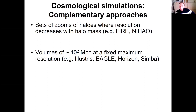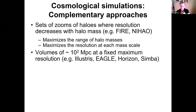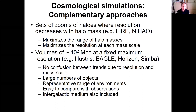Cosmological simulations come in two main types: zoom simulations of individual galaxies or clusters, allowing maximum resolution for a particular object and a wide range of galaxy masses; and large-volume simulations with uniform resolution that provide good statistics, scaling relations and their scatter, environmental effects, and better observational comparison. The same model applies to all objects since resolution determines the model. They are complementary techniques — zooms give high resolution on the galaxy, large volumes give high resolution also on the surrounding gas.